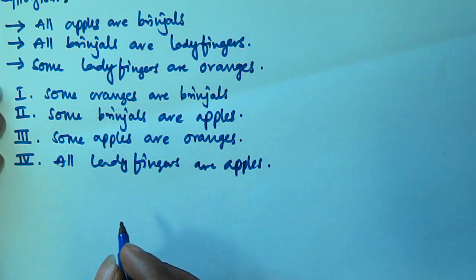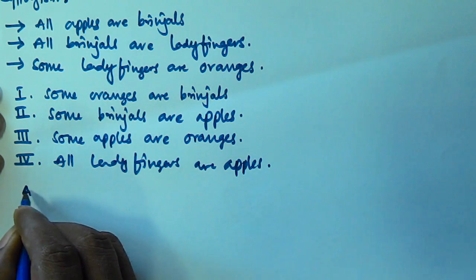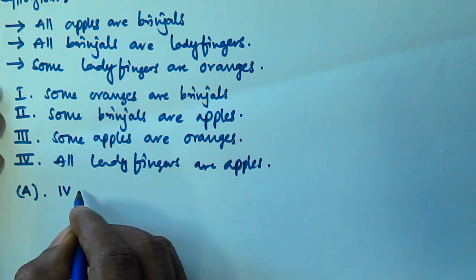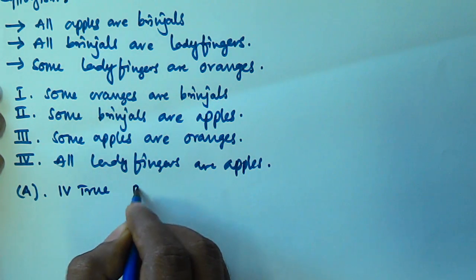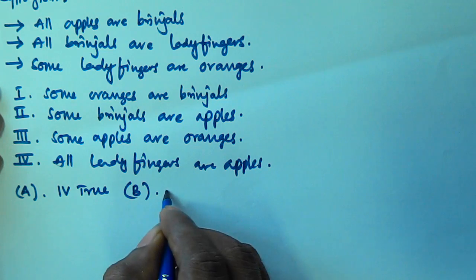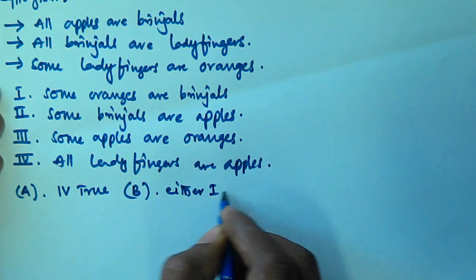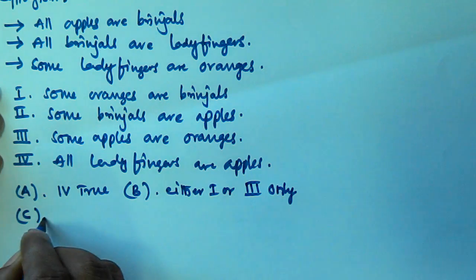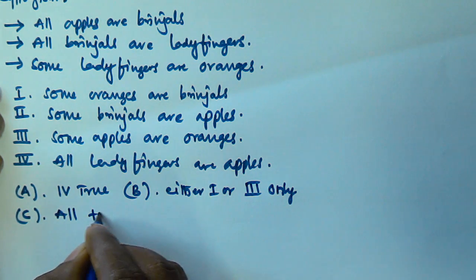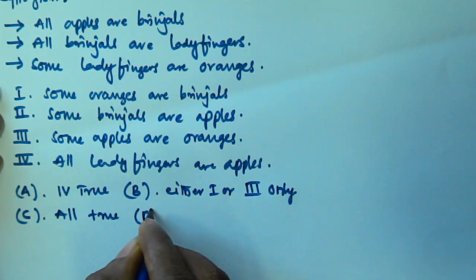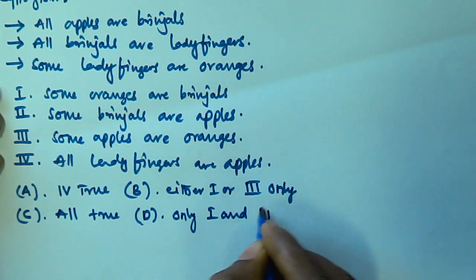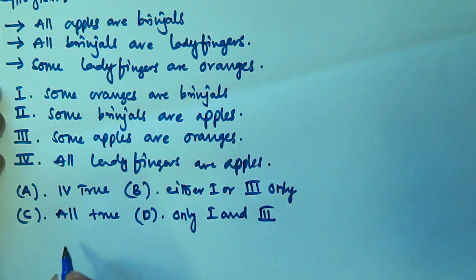So the options given are: Option A: Only four is true. Option B: Either one or three only. Option C: All are true. Option D: Only one and three. And option E is None of these.